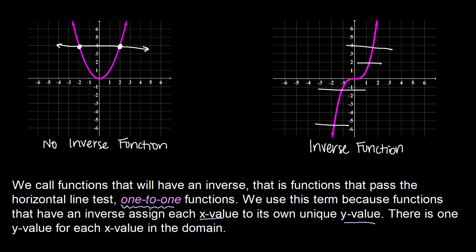So this first function here that did not pass the horizontal line test, we would say this is not one-to-one. But this x cubed graph which did pass the horizontal and the vertical line test, we would say that this one is one-to-one.